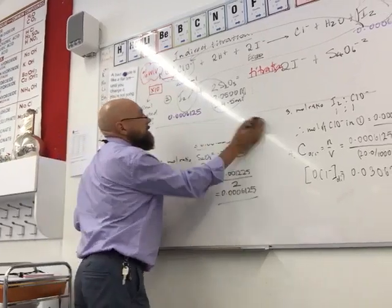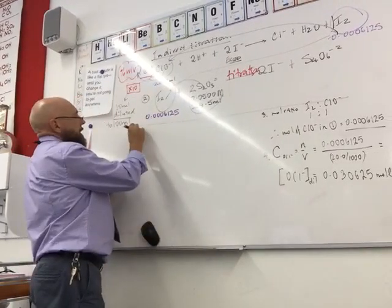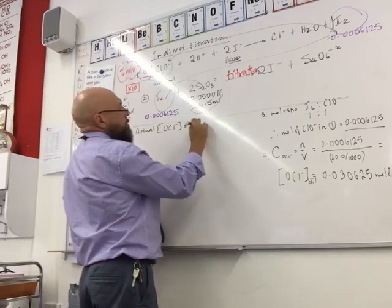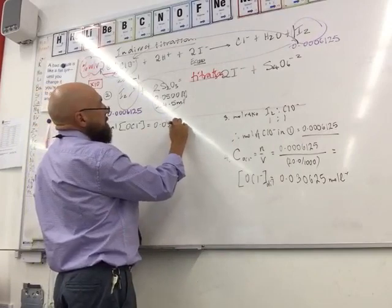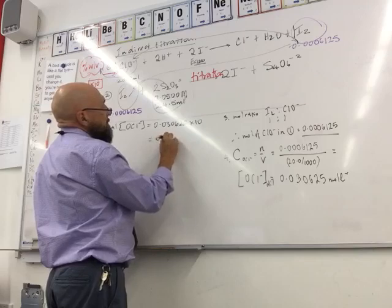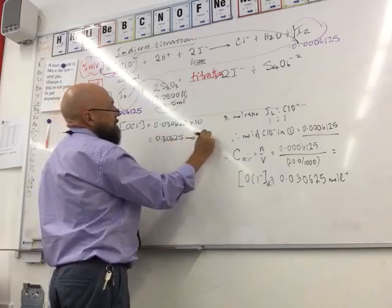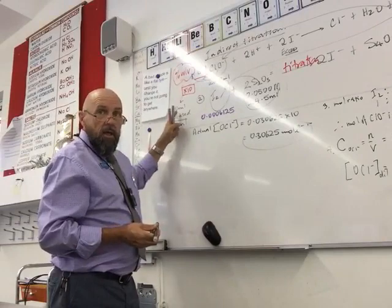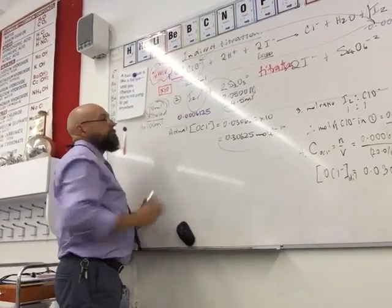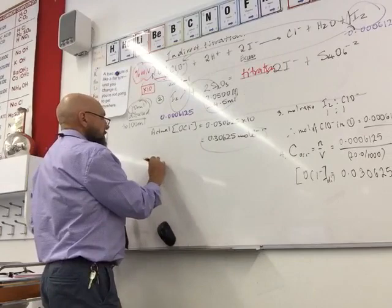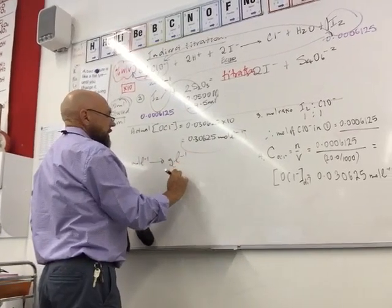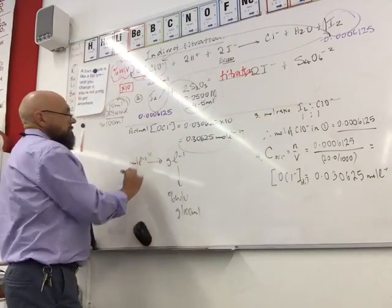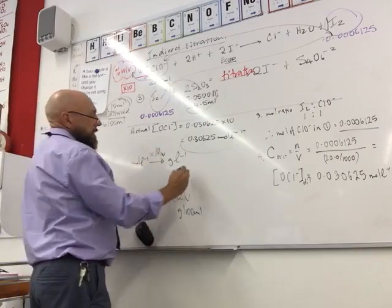Now we account for the dilution. The original sample was diluted 10-fold, so the actual concentration of hypochlorite in the undiluted 10 mL sample is 0.030625 × 10 = 0.30625 mol/L. From here, we convert from mol/L to g/L by multiplying by the molecular weight, and then divide by 10 to get percent weight by volume (g per 100 mL).